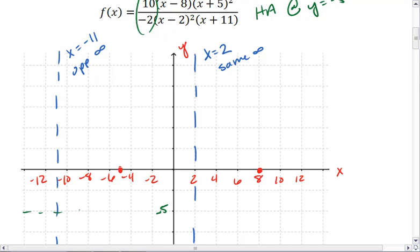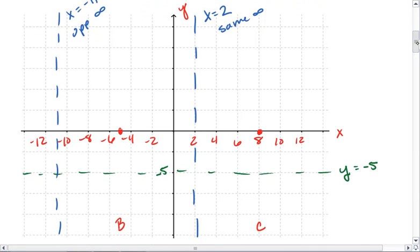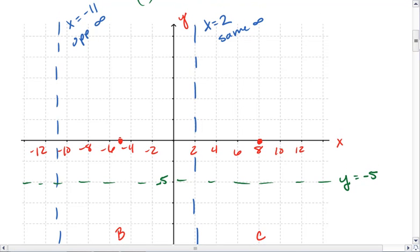Let's plot that on here. Now that we have all three parts, we have our roots, we have our vertical asymptotes, we have our horizontal asymptotes.